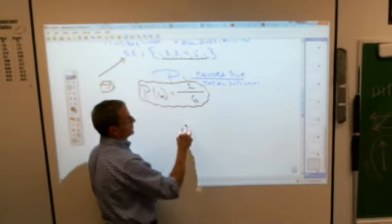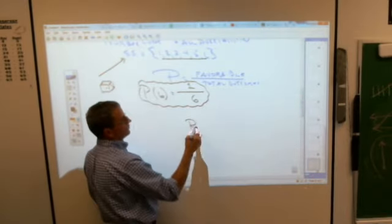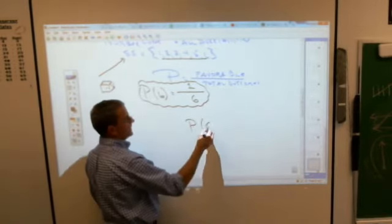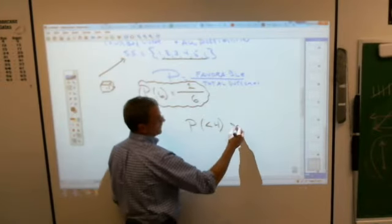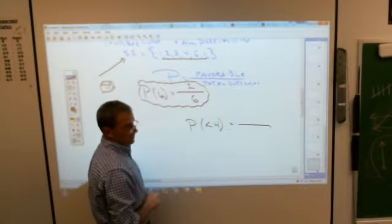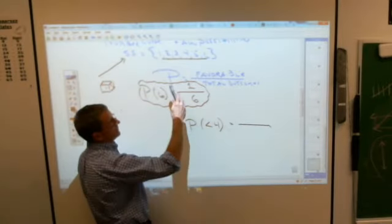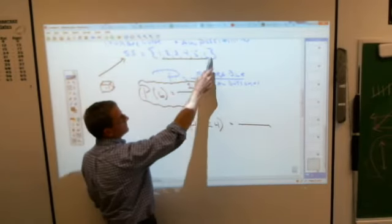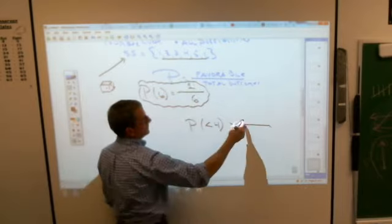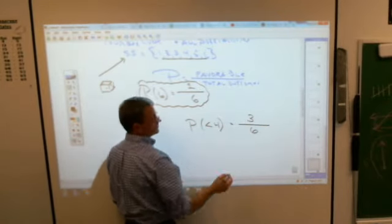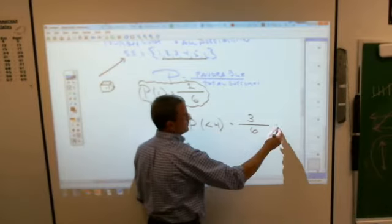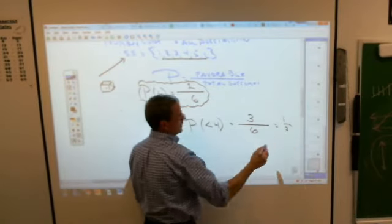What about this? What's the probability of rolling a number that is less than four? So if you're figuring that out, you have to know how many numbers are less than four. How many are less than four? Three. Does four count? No, because four is not less than four. So three-sixths, which obviously you can reduce to one-half.